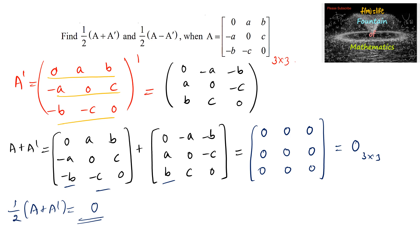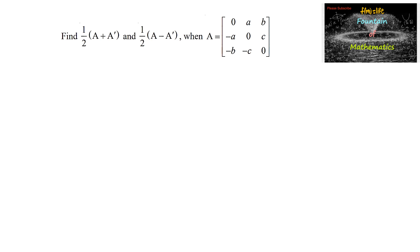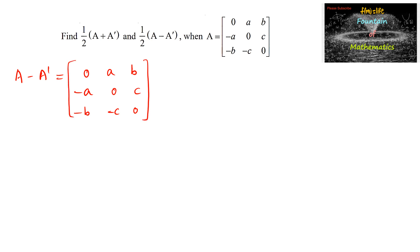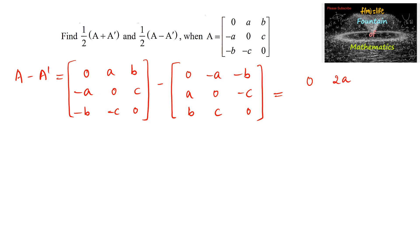Now let's find (1/2)(A − Aᵀ). Subtracting Aᵀ from A: 0−0=0, A−(−A)=2A, B−(−B)=2B; (−A)−A=−2A, 0−0=0, C−(−C)=2C; (−B)−B=−2B, (−C)−C=−2C, and 0−0=0.